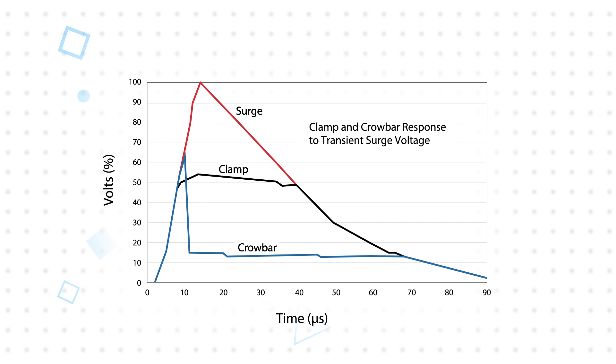An MOV also features a clamping action, but the clamping voltage is typically much higher and so it can only be used with devices that can tolerate a higher peak voltage.